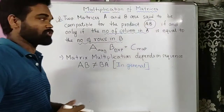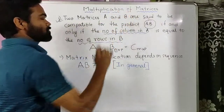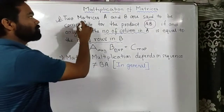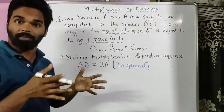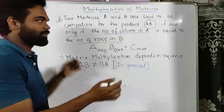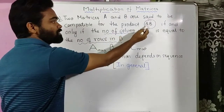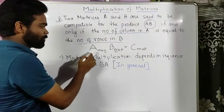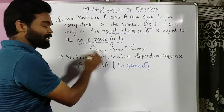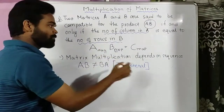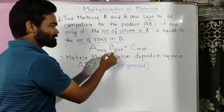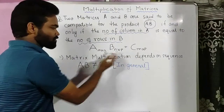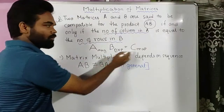Today's topic of discussion is multiplication of matrices. When you multiply two matrices, two things we should keep in mind. First, two matrices A and B are said to be compatible — which means we can multiply them — if and only if the number of columns of the first matrix equals the number of rows of the second matrix. Suppose matrix A has order m×n and matrix B has order n×p; these two must be equal. The order of the resultant matrix will be m×p.